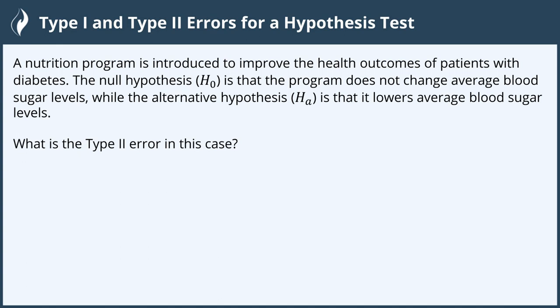What is the type 2 error in this case? To help remind me what type 1 and type 2 errors are, I like to write them down: type 1 and type 2. Then I like to say the phrase 'true or false.' We don't say false or true, so we go in the same order as type 1 and type 2 and say 'true or false.' This helps me remember that the null hypothesis for a type 1 error is true, and that the null hypothesis for a type 2 error is false.